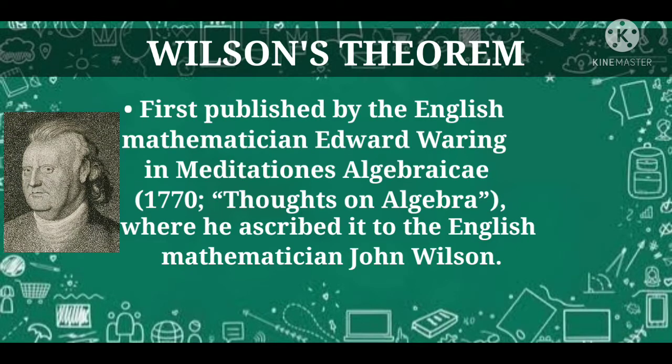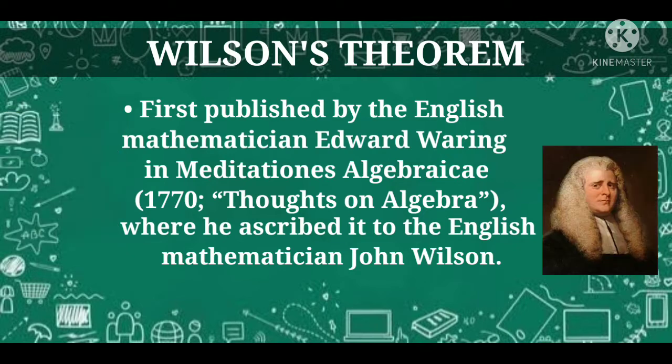This conjecture was first published by the English mathematician Edward Waring in Meditationes Algebraici, 1770, "Thoughts on Algebra," where he ascribed it to the English mathematician John Wilson.